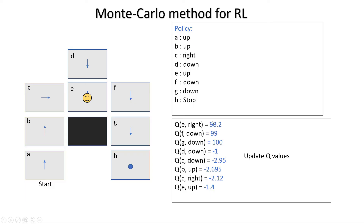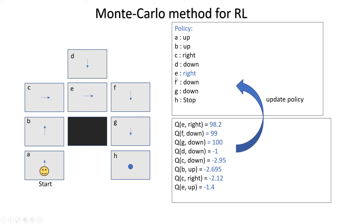We update the Q values by taking the average of those lists. Now we have to update the policy. We set the action that maximizes the Q value for each state. For state E: E-up is minus 1.4, E-right is 98.2, and E-left we assume some initial value like zero since we have no data. So we update the policy for E because for other state-action pairs the values are already optimal — the maximum Q values already correspond to the correct actions.